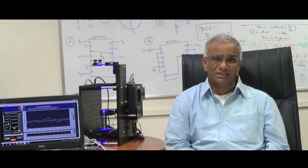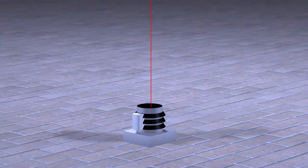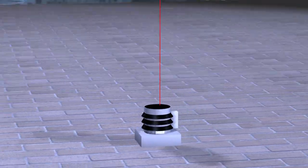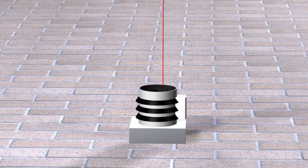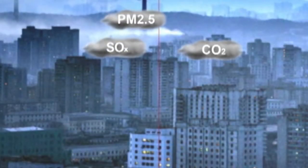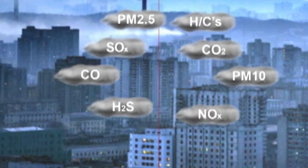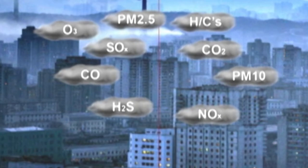The first technology which we have developed is called Ohm. Ohm is a technology which enables us to monitor the environment through which light is passing. If light is passing through air, we get the air quality. If light is passing through water, we get the water quality.